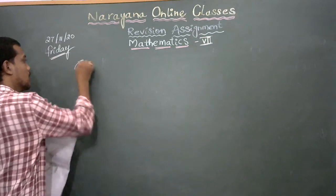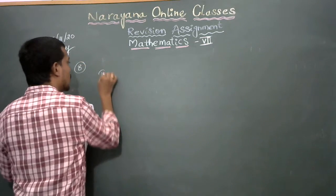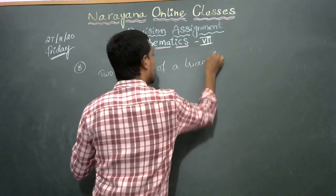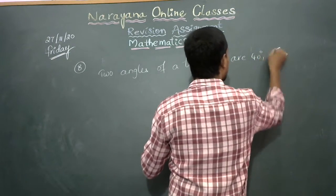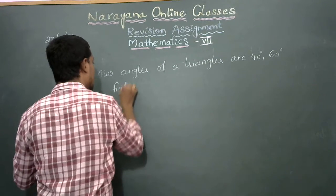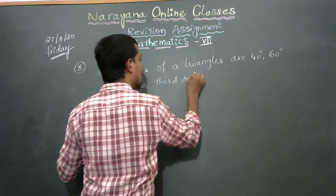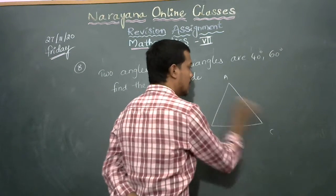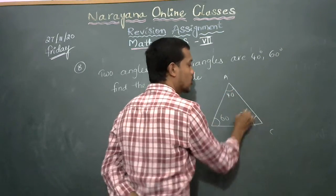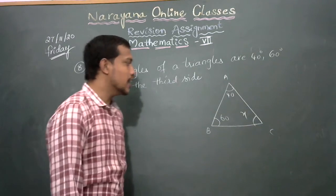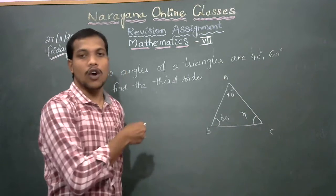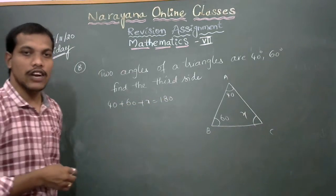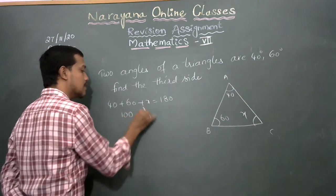Now the 8th question: two angles of a triangle are 40 degrees and 60 degrees. Find the third angle. I am drawing triangle ABC — here one angle is 40, another is 60, and we don't know the third angle, so I am taking it as x. In a triangle, 40 plus 60 plus x equals 180. That gives 100 plus x equals 180.